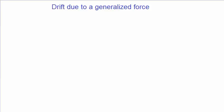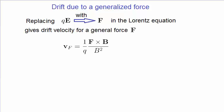Drift not only occurs due to an electric force in the presence of a magnetic field, but can also occur in the presence of other forces. Let's obtain an equation with a general expression for the force in the drift velocity formula. We do this by replacing the electric force QE with a general expression for the force F in the Lorentz equation. Following the same procedure, we obtain a general form of the drift velocity. However, now the charge Q is explicitly in the formula, whereas when the force was an electric force QE, the charge cancelled out.